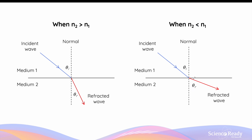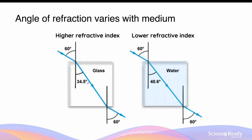This means the refracted light ray will be bent and travel away from the normal compared to the incident ray. Since the value of the refractive index determines the angle of refraction, when light travels into glass versus water, the angle of refraction will be slightly different. In glass, the angle of refraction is slightly smaller than in water, which implies that the refractive index of glass is higher than that of water.